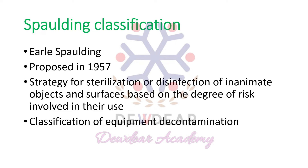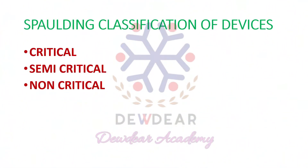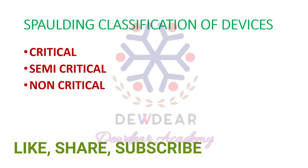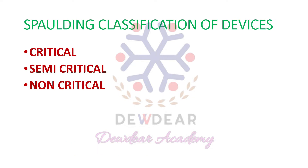It is a standard system of classification for the disinfectants, based on the degree of risk of contamination or degree of risk involved in their use. It is a classification of equipment decontamination or a standard system of classification for the disinfectant. According to Spalding classification, the devices or surfaces can be divided into critical, semi-critical, and non-critical.